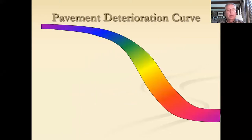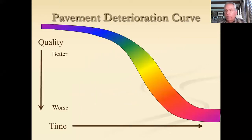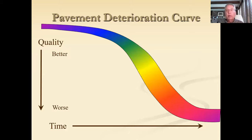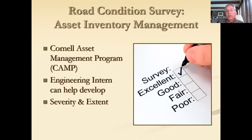A good place to start is knowing the overall condition of the road in question. If left unchecked, all roads will follow this typical pavement deterioration curve at their own pace, because the original design and construction materials are going to be different for each road. They will follow this curve, but some will do it quicker than others. Maybe your department already has a road condition survey where your roads are ranked. If not, the Cornell Asset Management Program can help you — they send an engineering intern who can help you develop a survey and will check both the severity and extent of the stresses on all your roads.